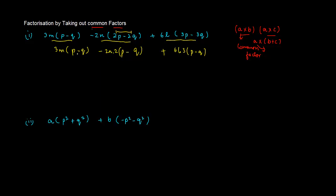So, basically, now we have got a common factor, which is P minus Q in all these three multiplicands. So now, if I take P minus Q as a common factor, then what am I left with?